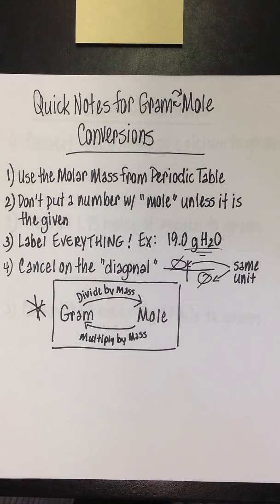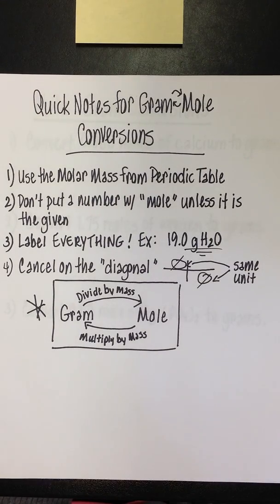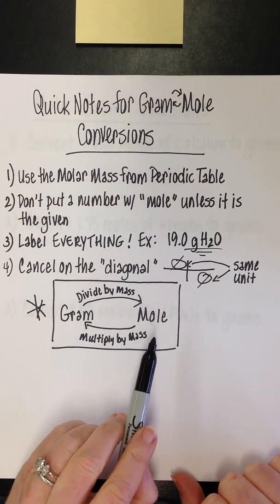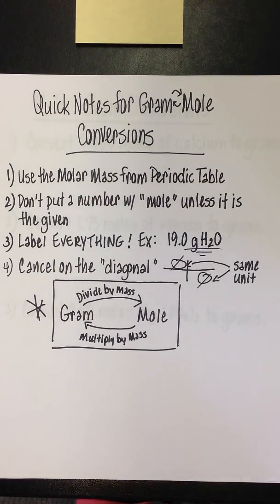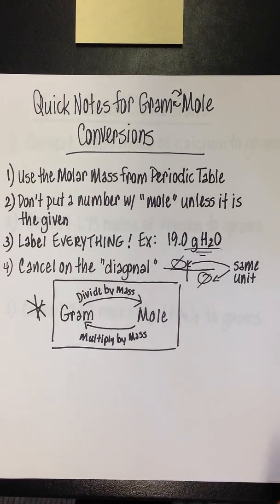So when we went from gram to mole, you saw that we were dividing by the molar mass. This time, we're going to be going the other way. We're going from mole to gram, so you're going to see that we're just going to end up flipping that ratio, and we're going to be multiplying by the mass.